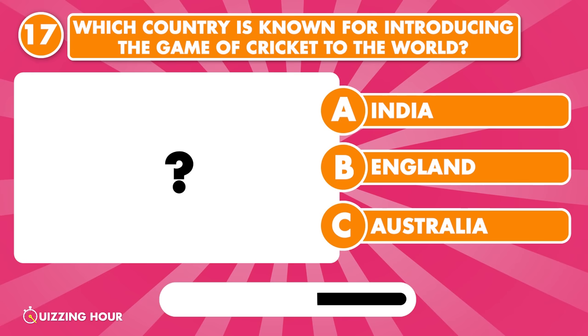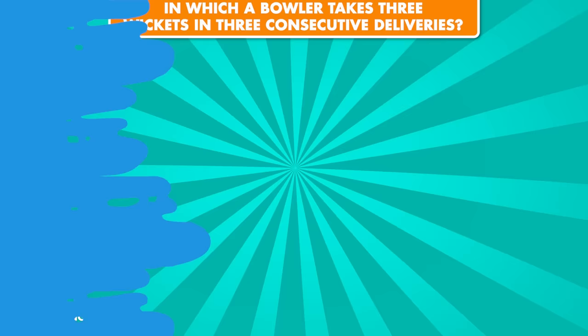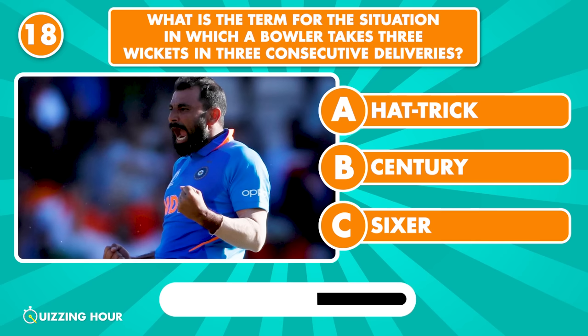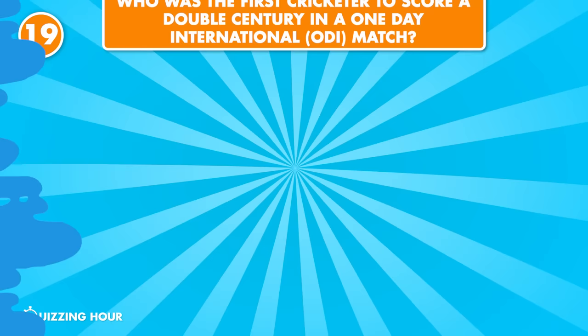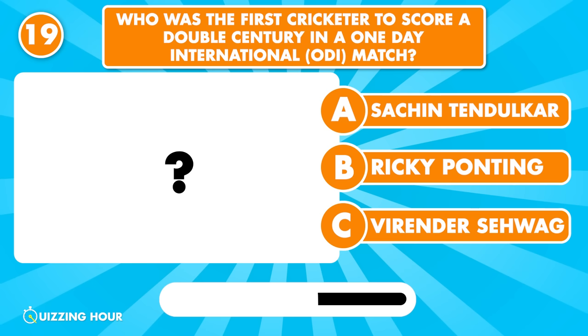England. What is the term for the situation in which a bowler takes three wickets in three consecutive deliveries? Hat trick. Who was the first cricketer to score a double century in a One-Day International match? Sachin Tendulkar, in 2010.